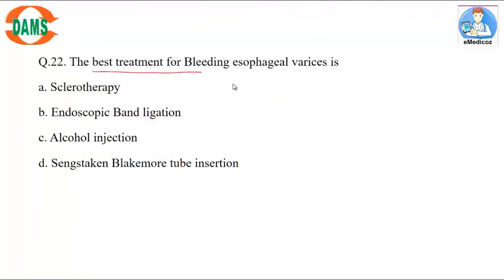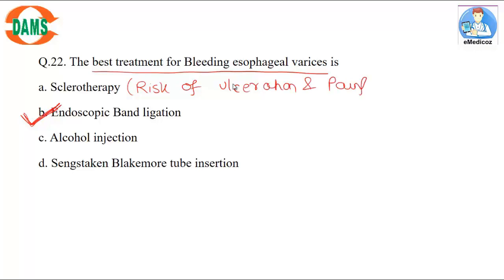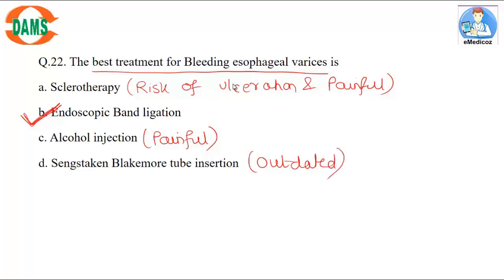Question 22: Best treatment for bleeding esophageal varices is endoscopic band ligation. Sclerotherapy carries a risk of ulceration and is very painful because the sclerosant causes tissue injury — it is outdated and no longer preferred. Correct answer: endoscopic band ligation.